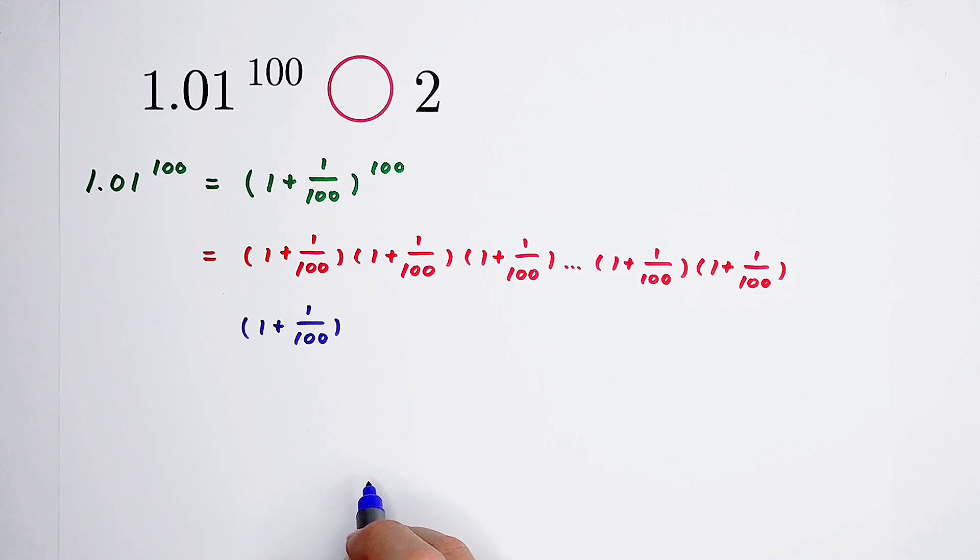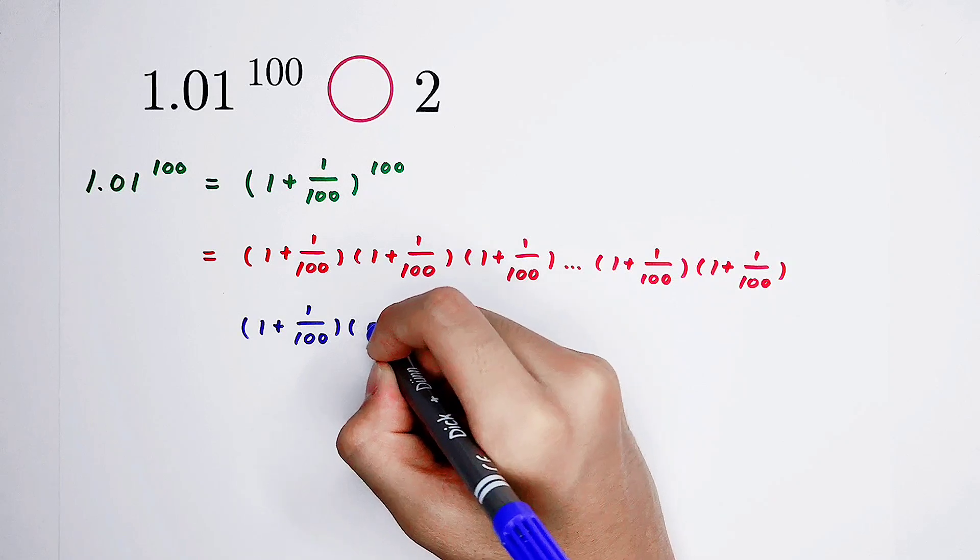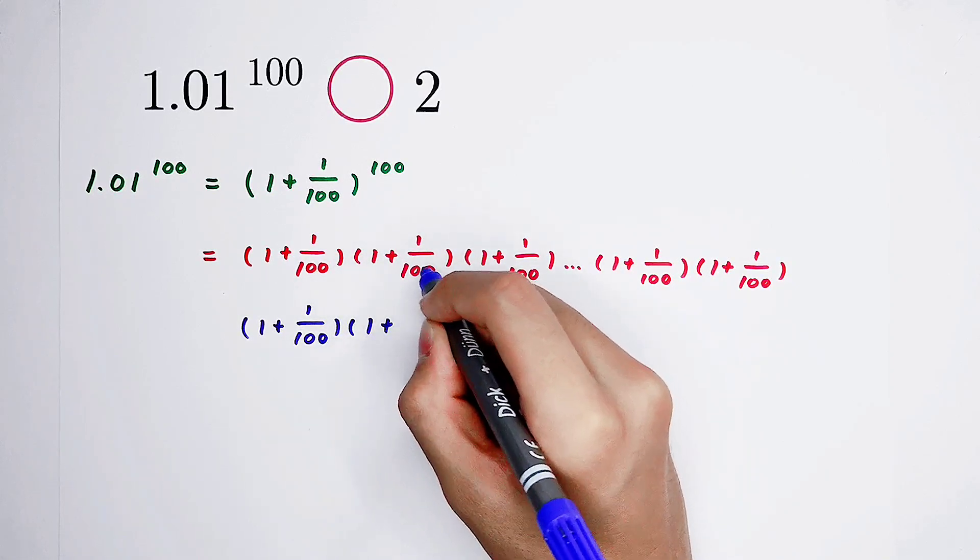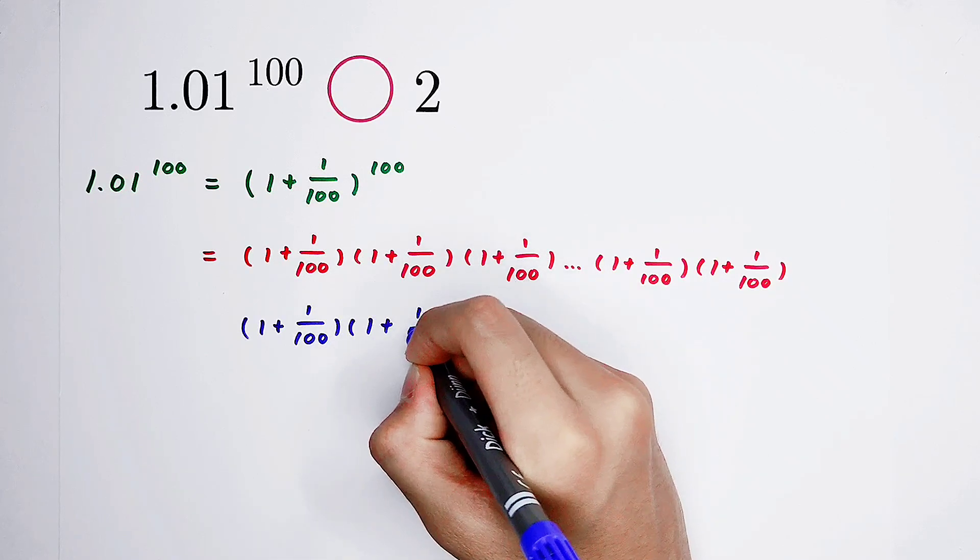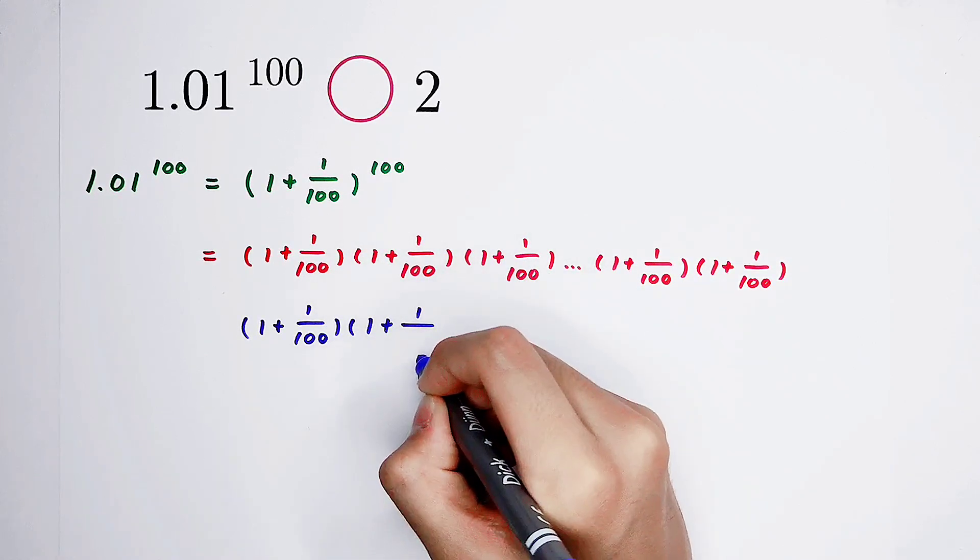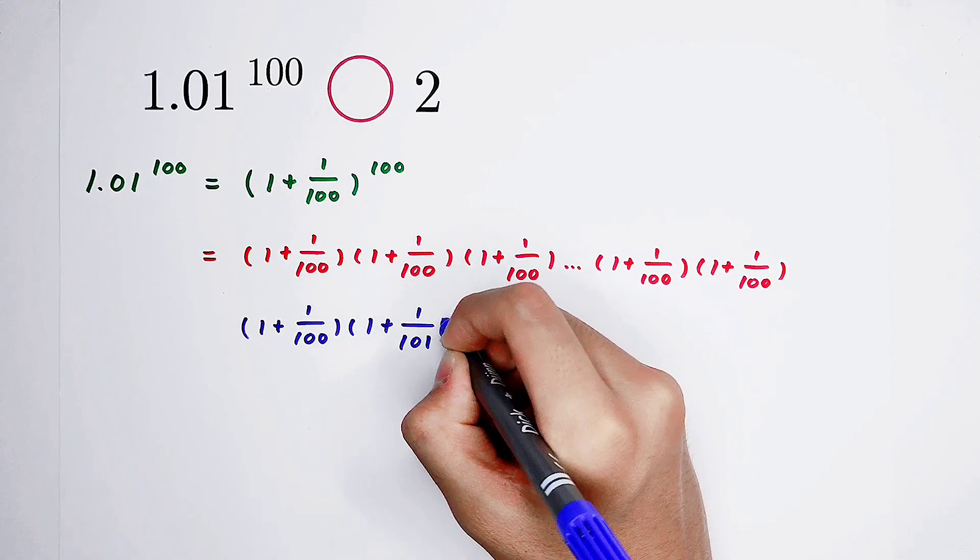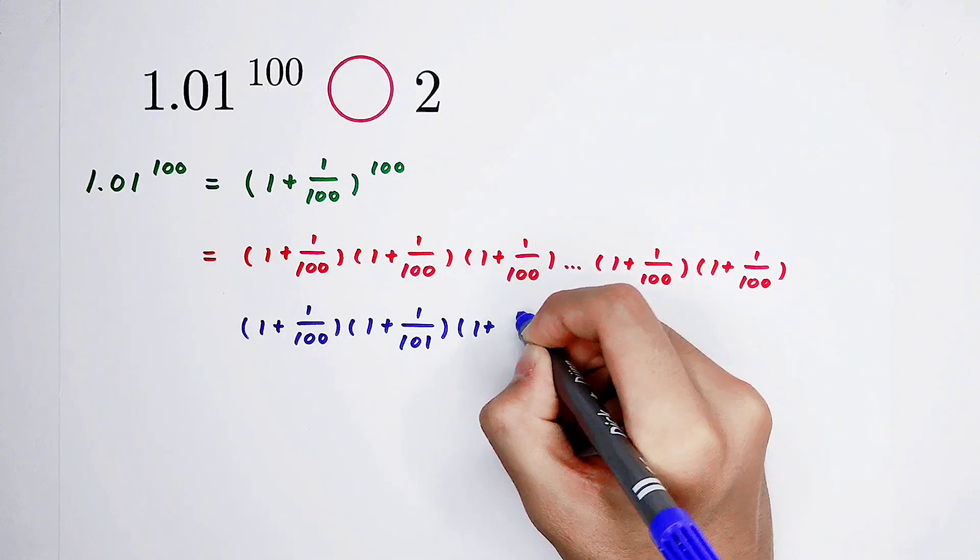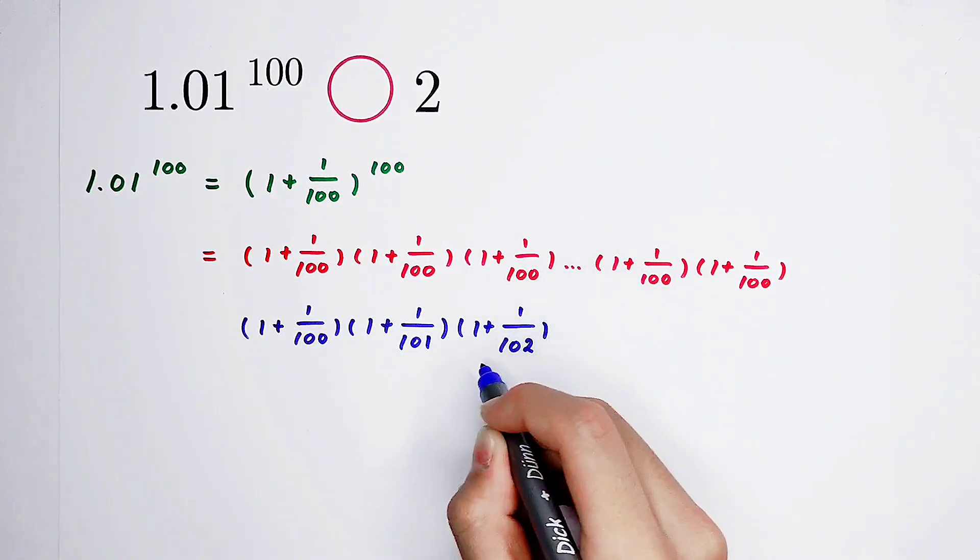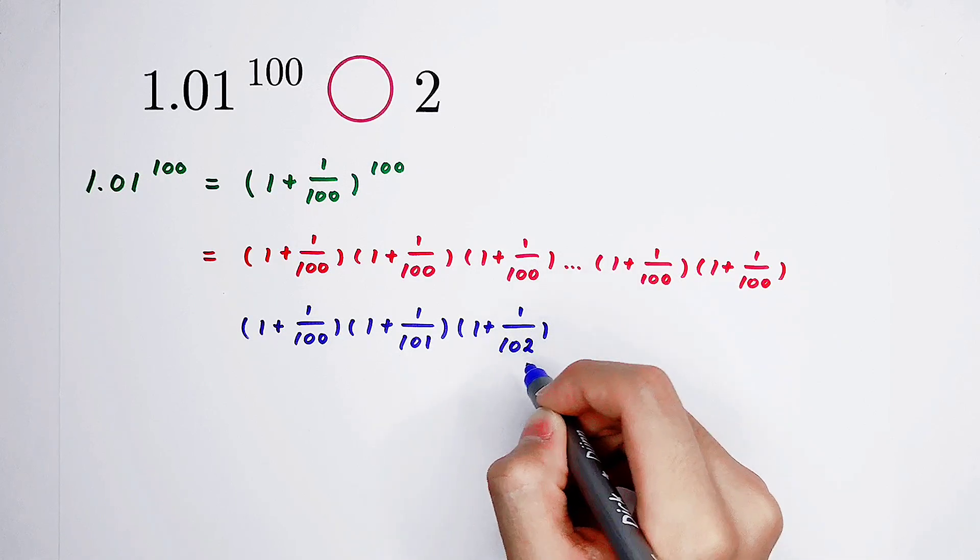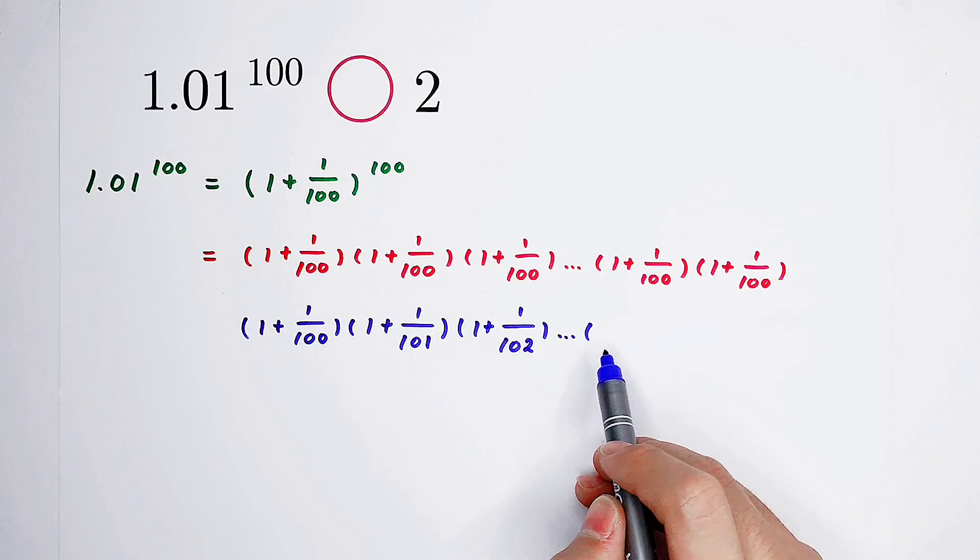But the second, hmm. I'm gonna change this 100. I'm gonna turn it into a bigger number. 100, I'm gonna turn it into 101. The third one, 1 over 102. So the fourth one is 1 plus 1 over 103.